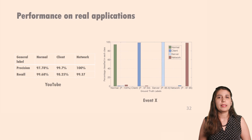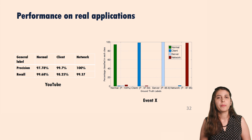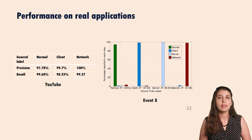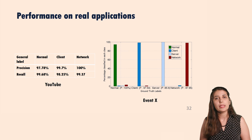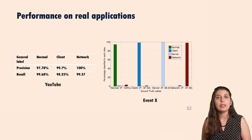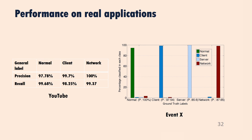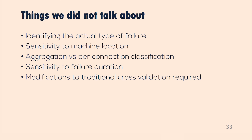That was the worst-case application. For real applications, we tried two. The first is the application that causes Event X, using past tickets. Our accuracies are much higher than the worst-case results. We also tried streaming YouTube videos from within VMs deployed in the cloud. Again, we have much higher accuracies, even though we couldn't show server-side failure results since we didn't have access to the YouTube servers.